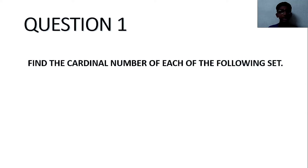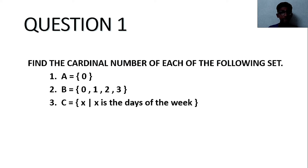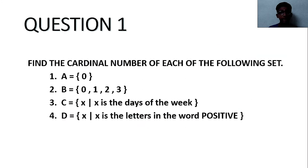Find the cardinal number of each of the following sets: A is equal to {0}, B is equal to {0, 1, 2, 3}, C is equal to {x | x is the days of the week}, D is equal to {x | x is the letters in the word 'positive'}, and E is the empty set.